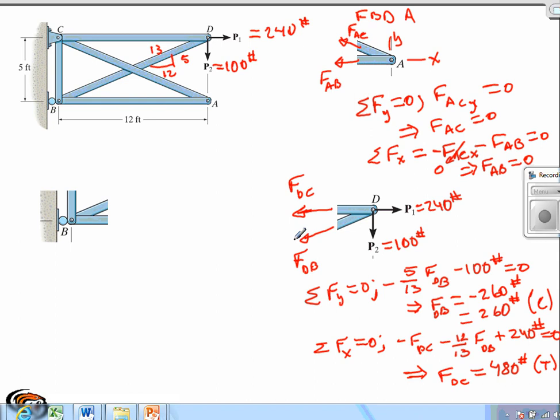So the last joint we're going to analyze is joint B. The horizontal force here is equal to zero. This is FBA, which is equal to zero. And we also have the force in member BD. And we computed that to be negative 260 pounds.